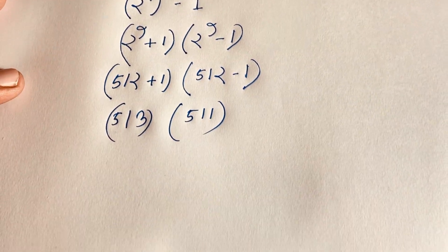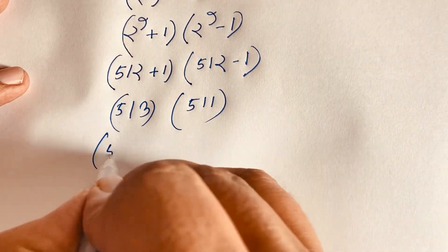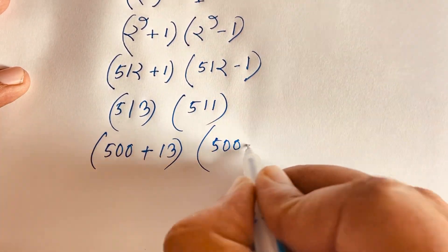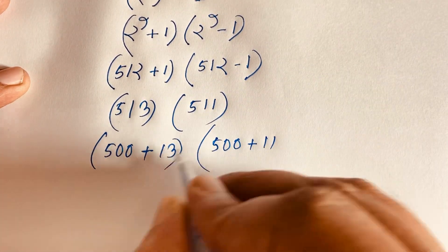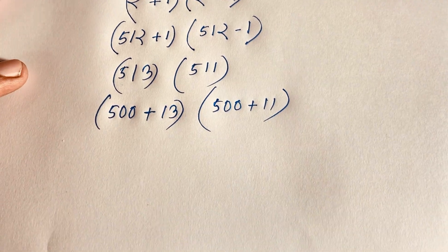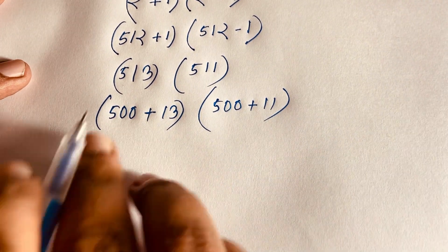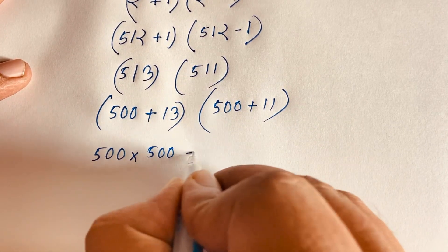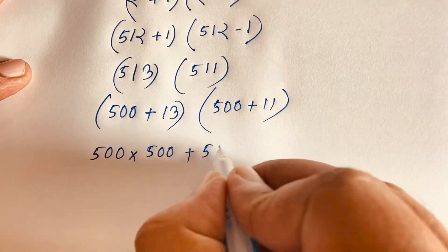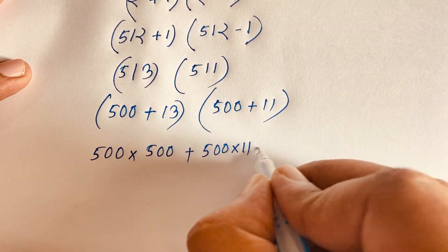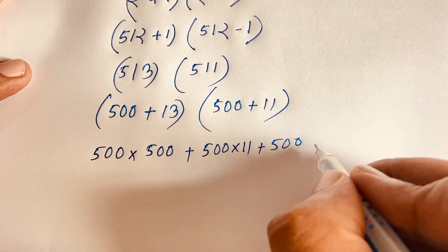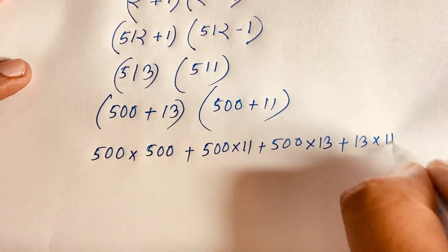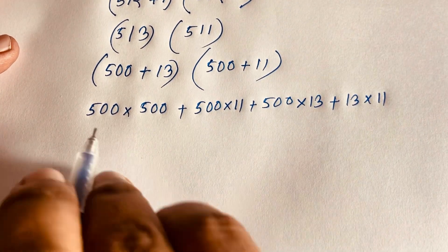Now we expand 513 times 511. We write 513 as (500 + 13) and 511 as (500 + 11). Expanding: 500 times 500, plus 500 times 11, plus 500 times 13, plus 13 times 11.